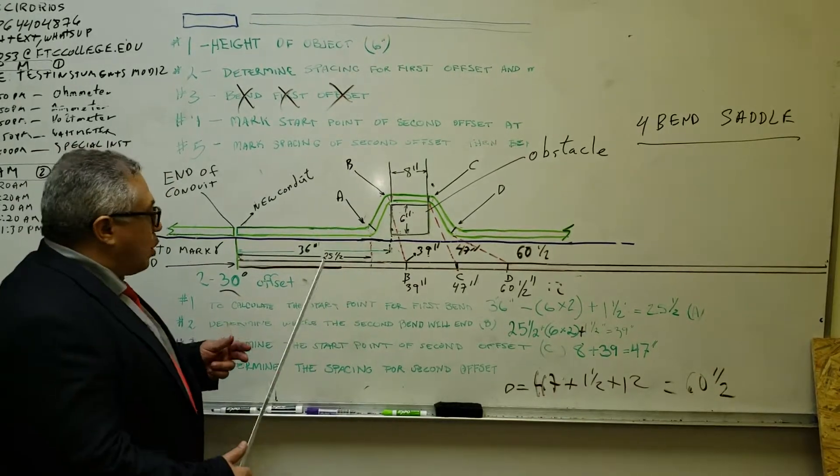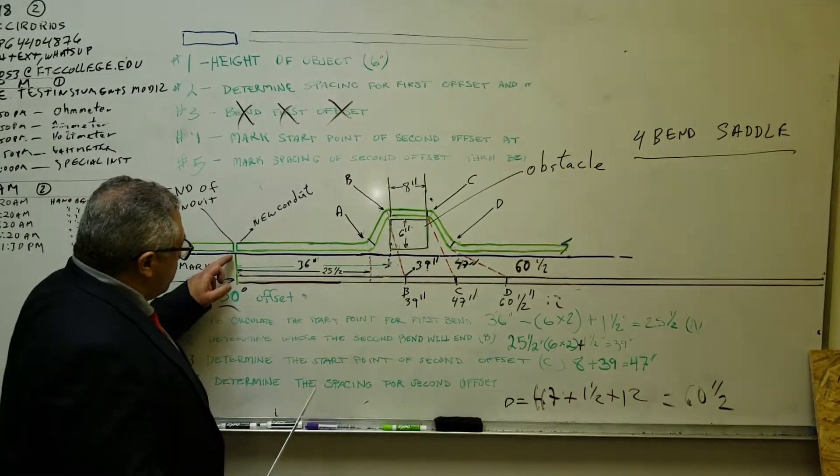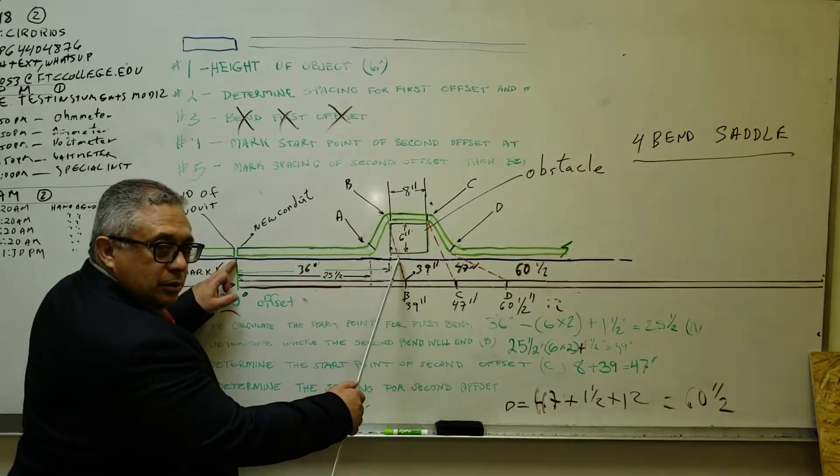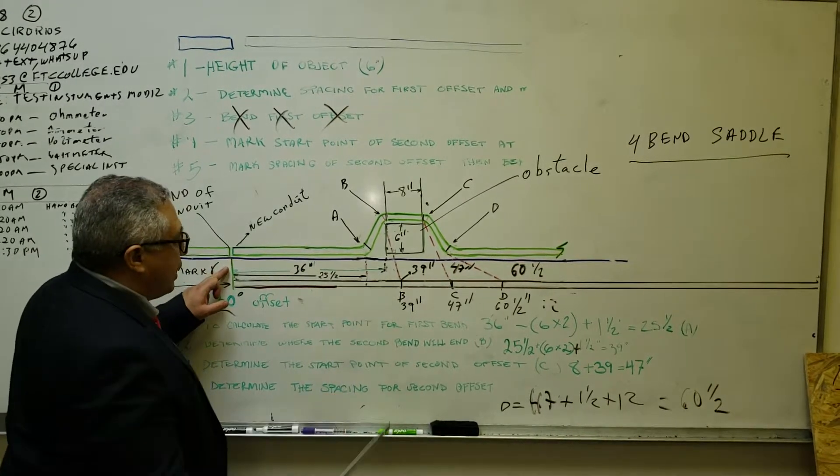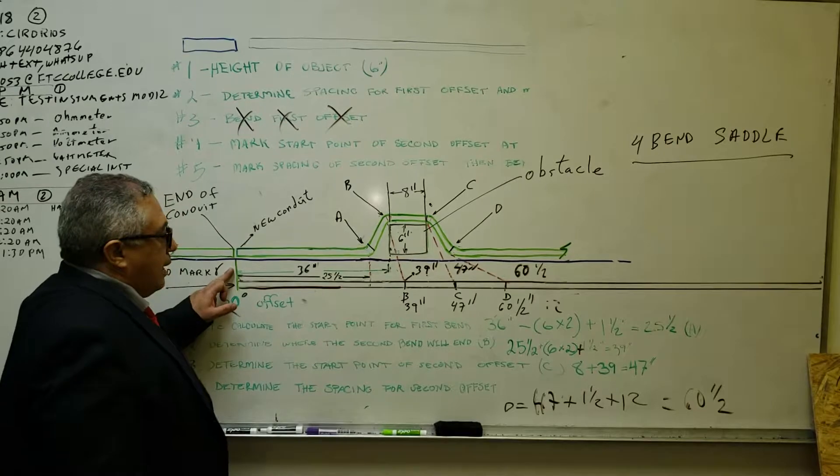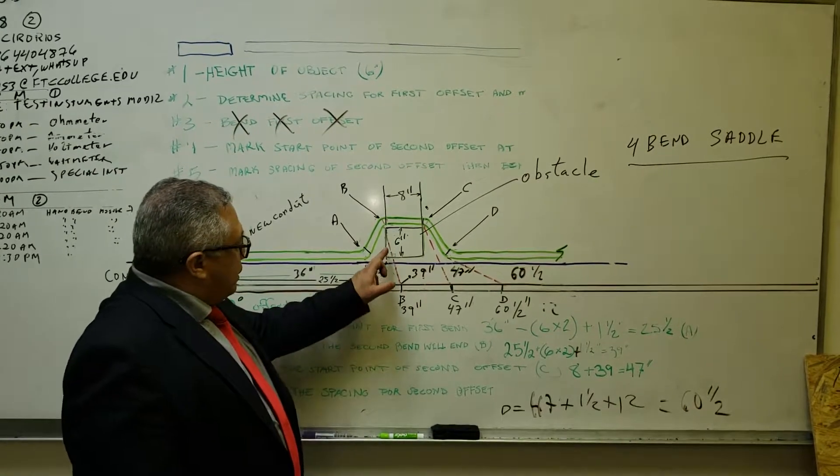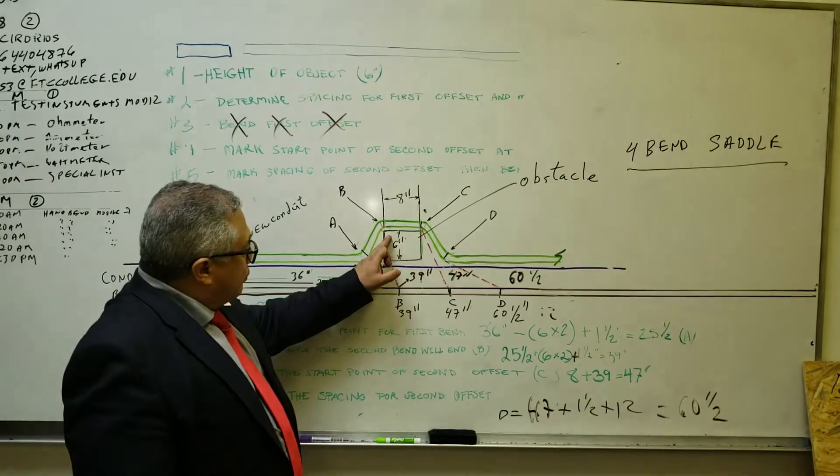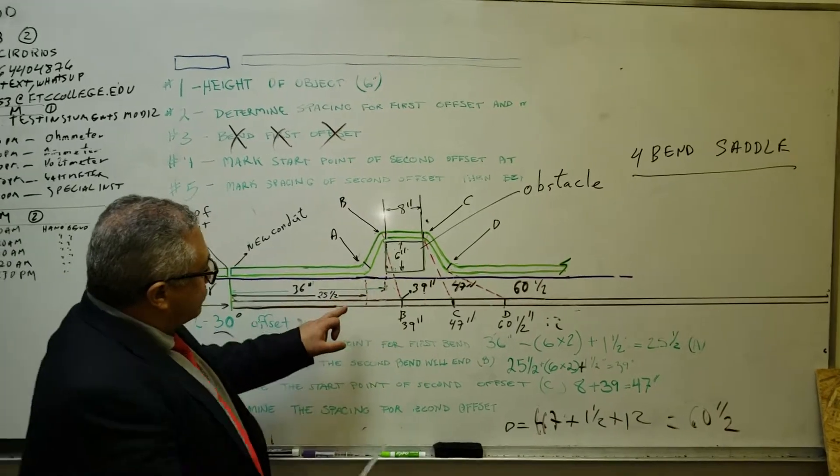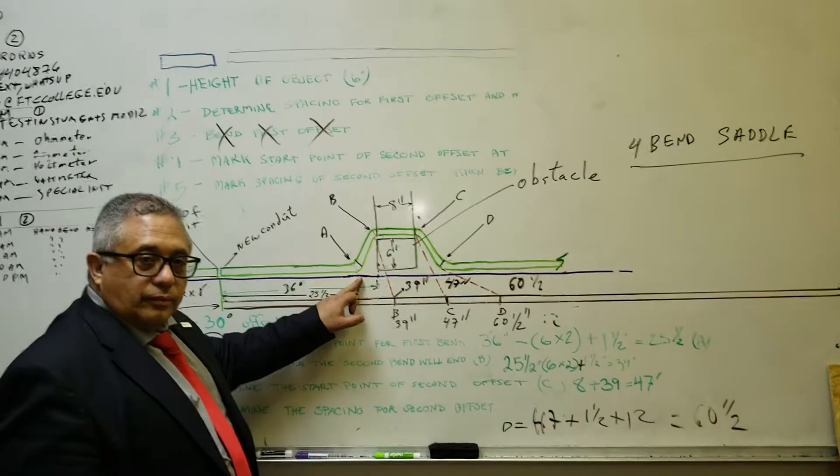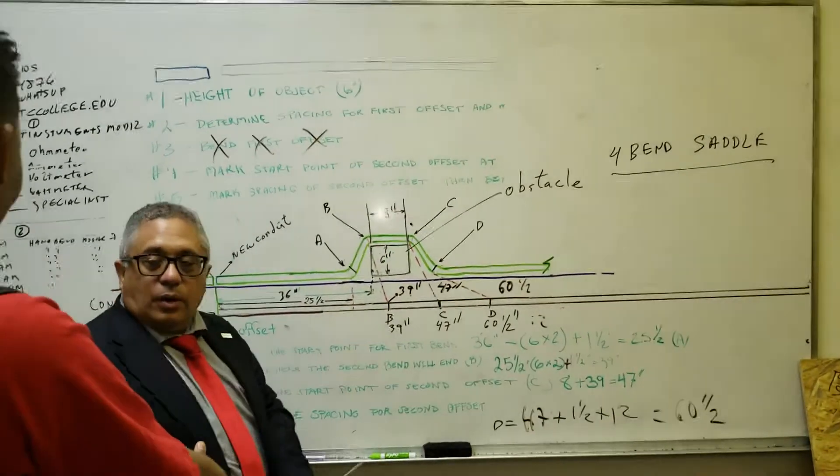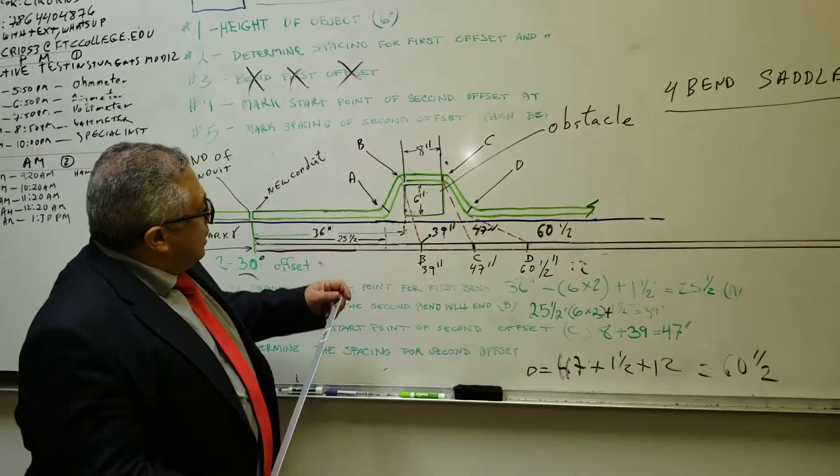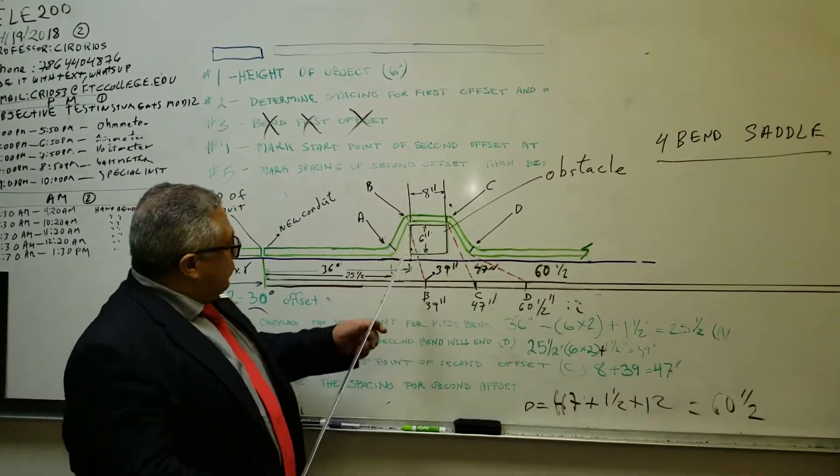So in order to overcome this, the first thing that you need to do is measure the distance between the end of your conduit and the obstacle. In this case, it's 36 inches. Now with this measurement, we need to apply the rule of the table to find out what is the distance. We know that this distance is, for 30 degrees, the height times the multiplier, which is 2.